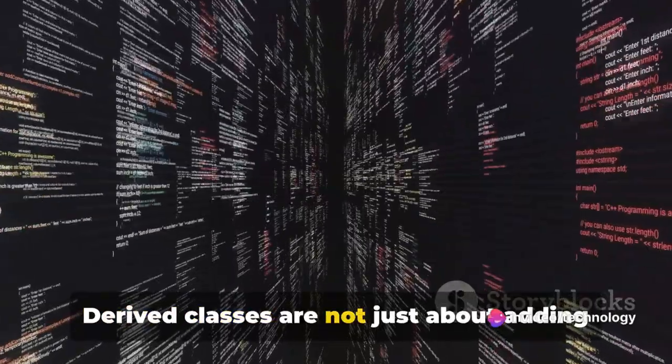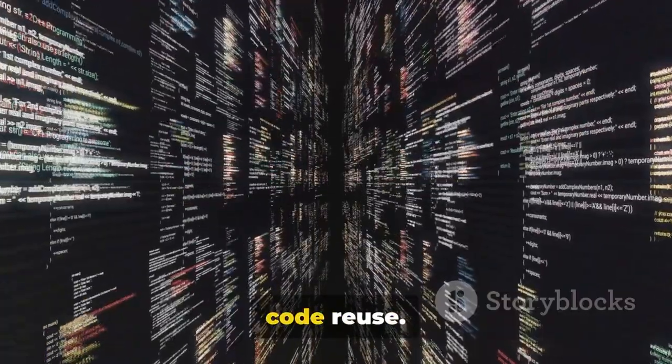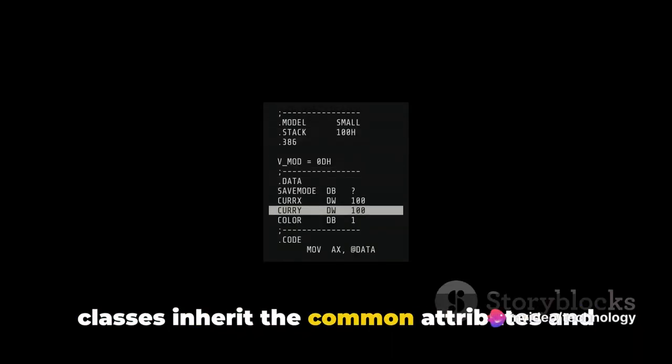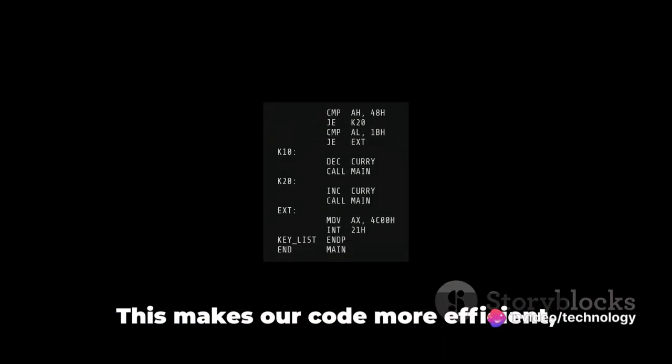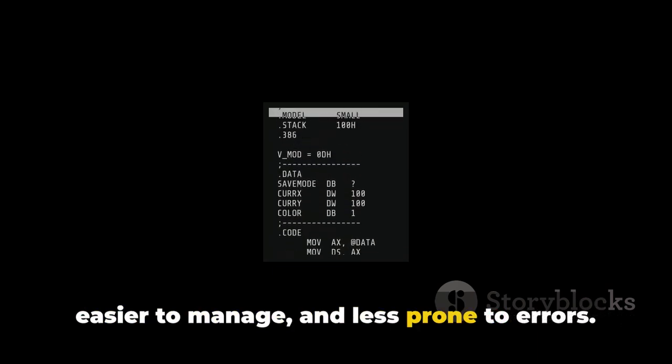Derived classes are not just about adding new stuff or doing things differently. They play a crucial role in promoting code reuse. Instead of writing the same code again and again, we can simply let the derived classes inherit the common attributes and behaviors from the base class. This makes our code more efficient, easier to manage, and less prone to errors.